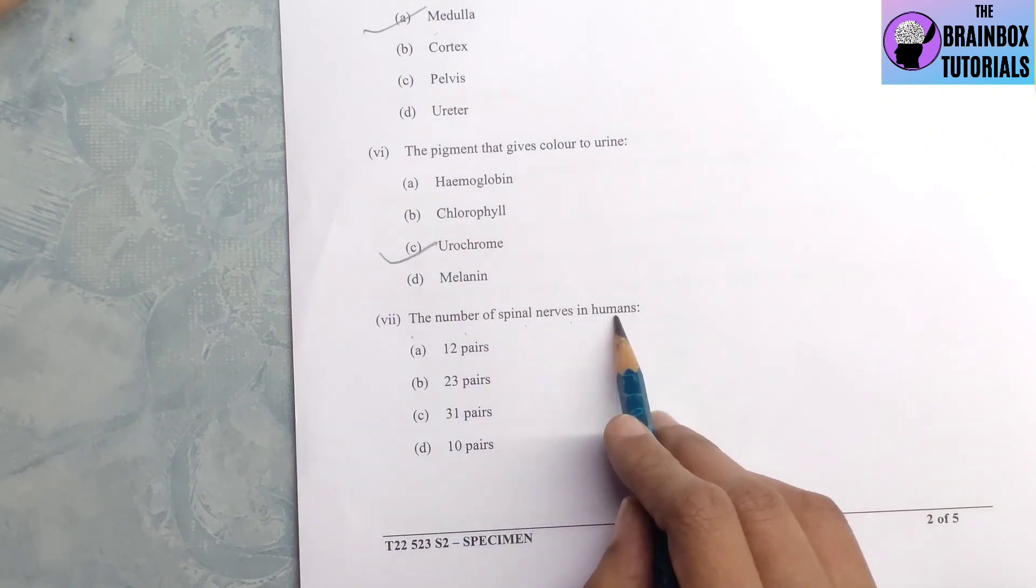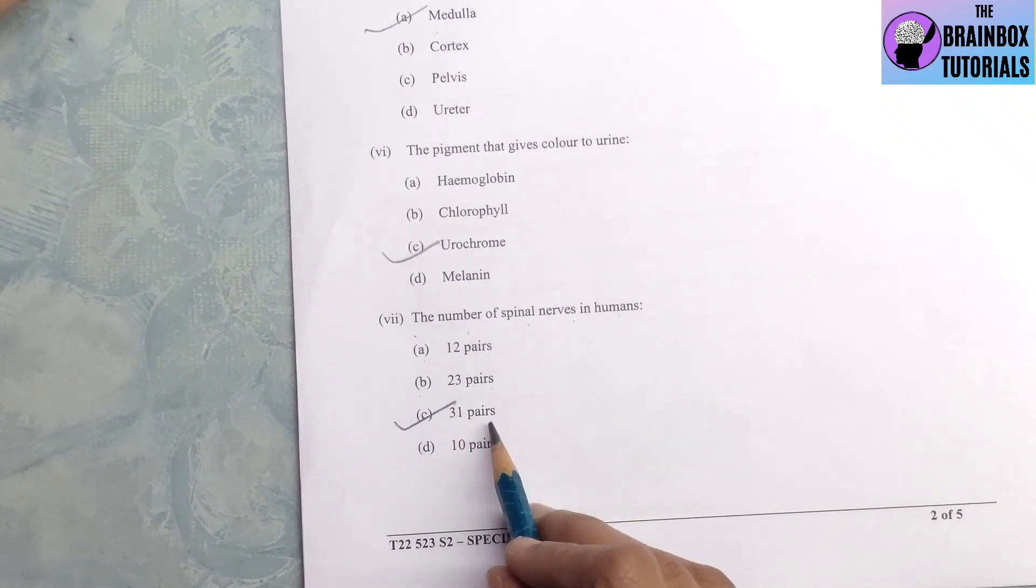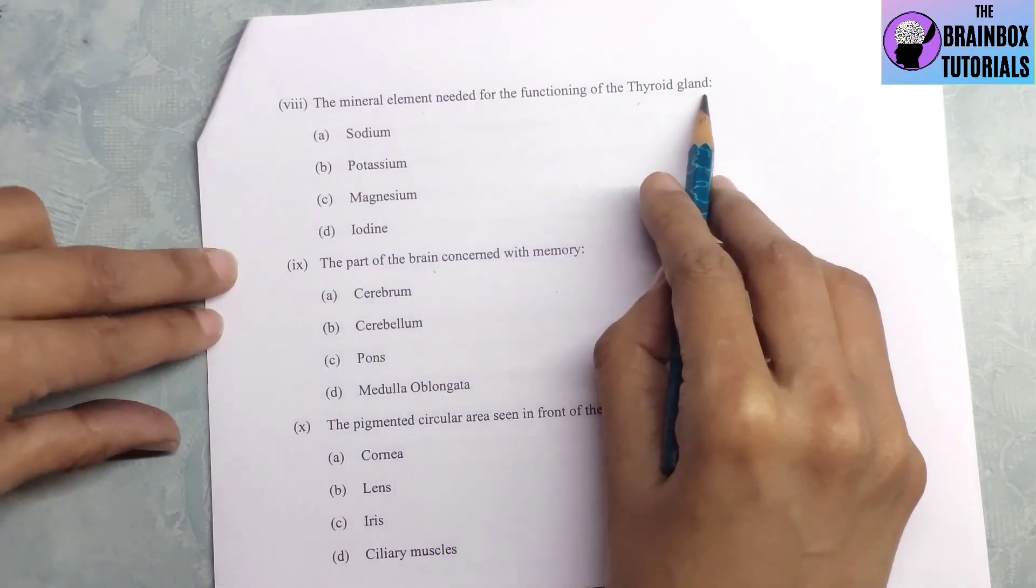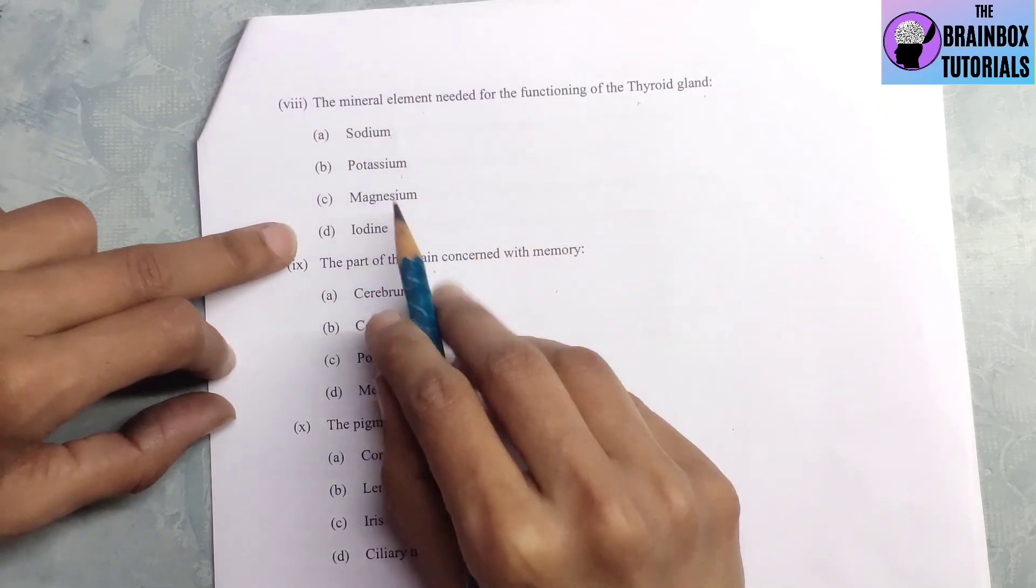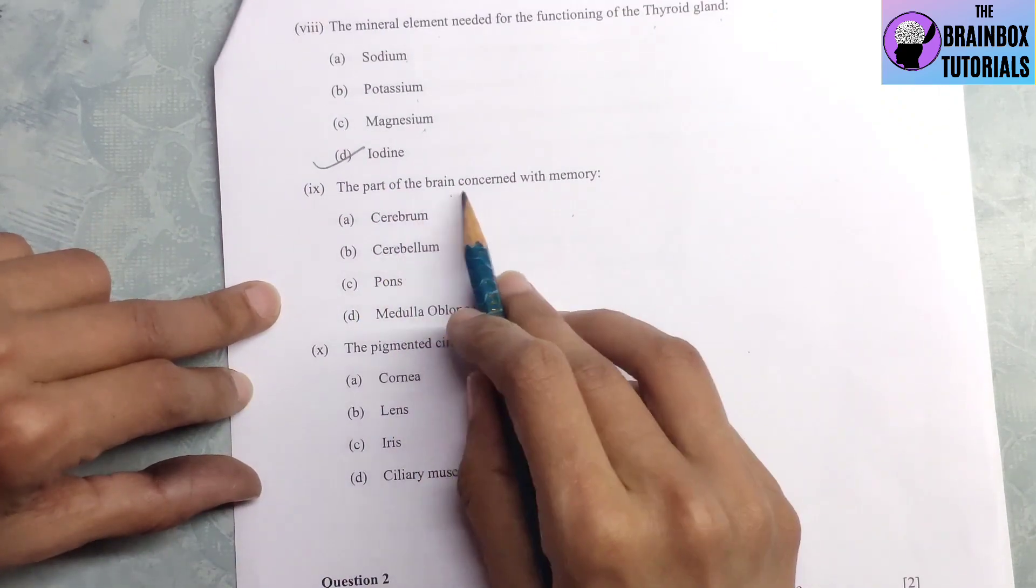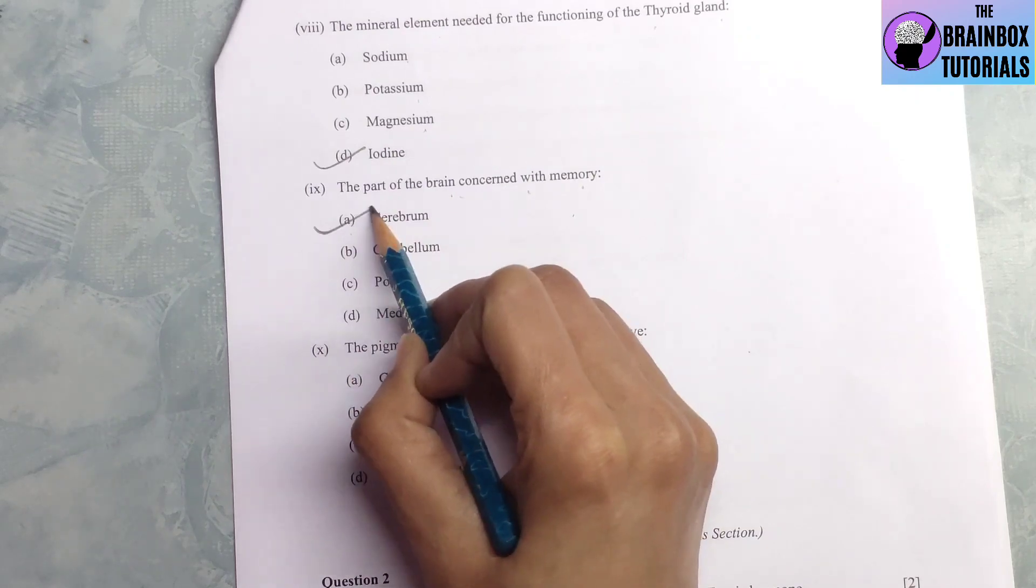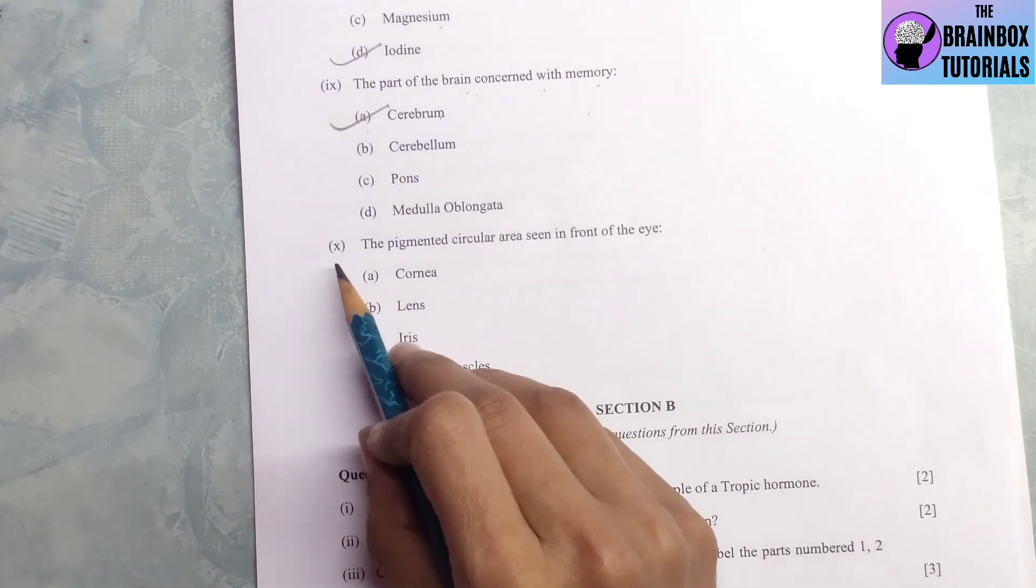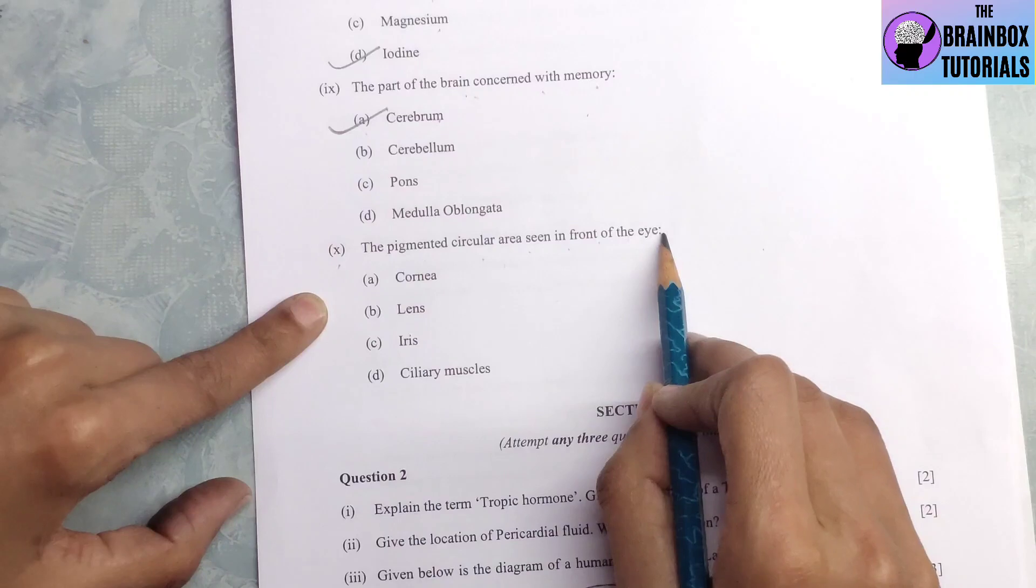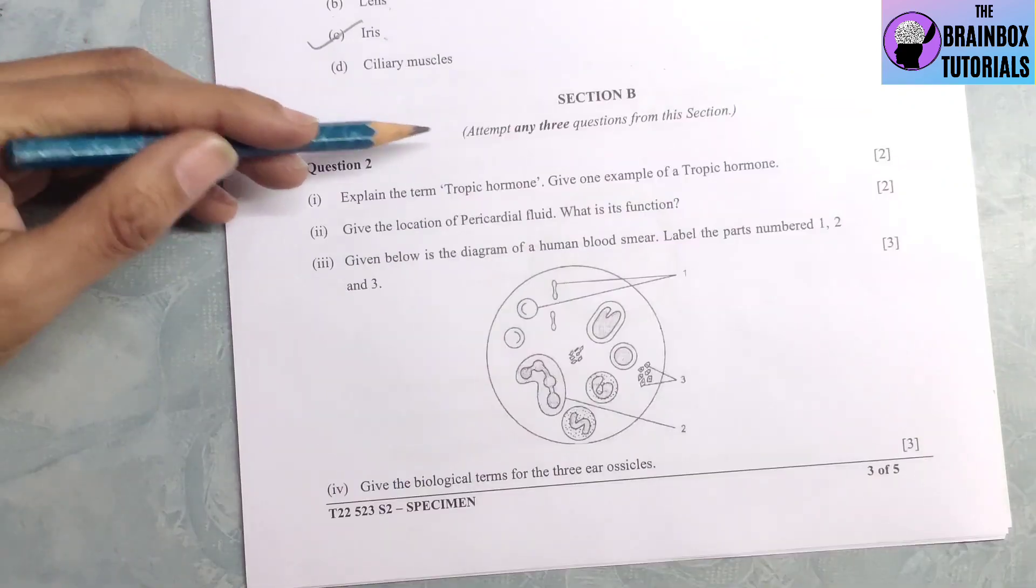Number 7, the number of spinal nerves in humans is 12 pairs, 23 pairs, or 31 pairs. Yes, 31 pairs is the correct option. Number 8, the mineral element needed for the functioning of the thyroid gland is sodium, potassium, magnesium, or iodine. Iodine is the correct option. Number 9, the part of the brain concerned with memory is cerebrum, so option A is the correct option. Last part, part 10, the pigmented circular area seen in front of the eye is iris. Number A cornea, B lens, C is iris. Iris is the correct option.